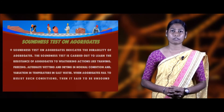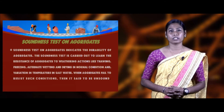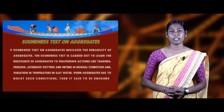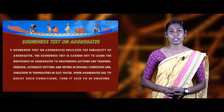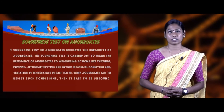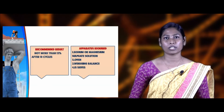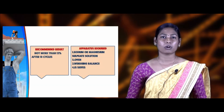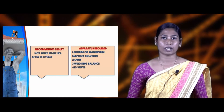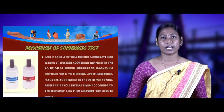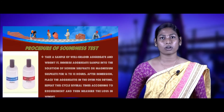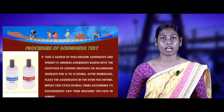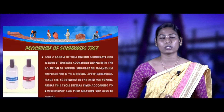The soundness test indicates the durability of aggregate. It shows the ability of aggregate to resist adverse effects of weathering — such as freezing and thawing, alternate wetting and drying, variations in temperature, and salt water. If the aggregate fails to resist such conditions, it is said to be unsound. The recommendation result: loss should not be more than 12% after 10 cycles when tested with sodium or magnesium sulfate solutions. Procedure: take well-graded aggregates and weigh them; immerse in sodium or magnesium sulfate solution for 16 to 18 hours; take out and dry in oven; repeat the cycles as required and measure the loss of weight.